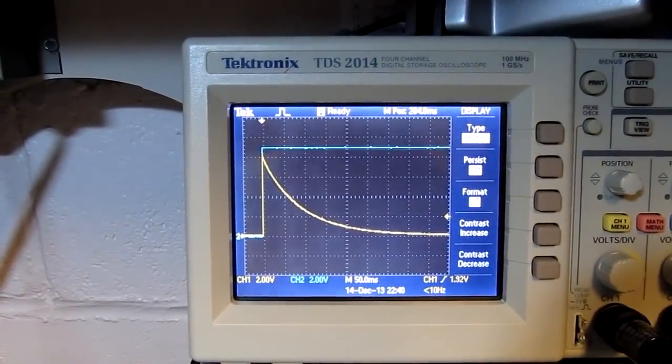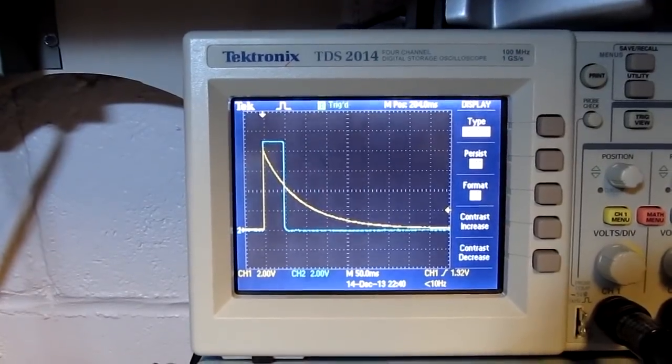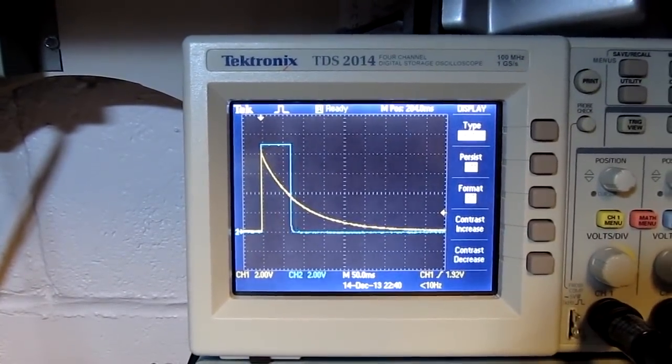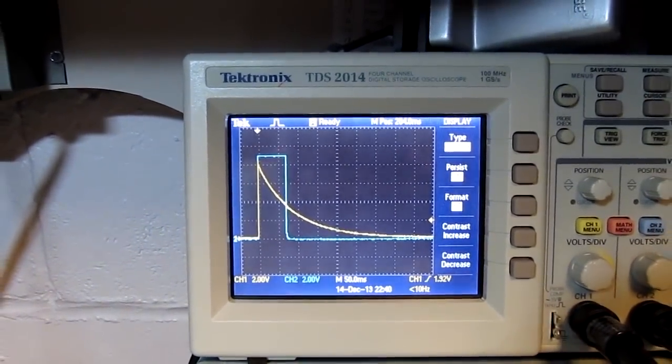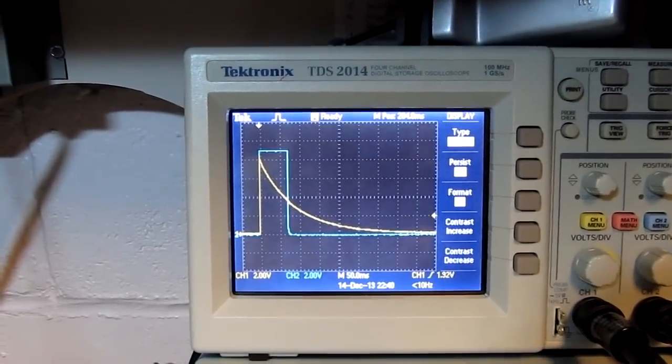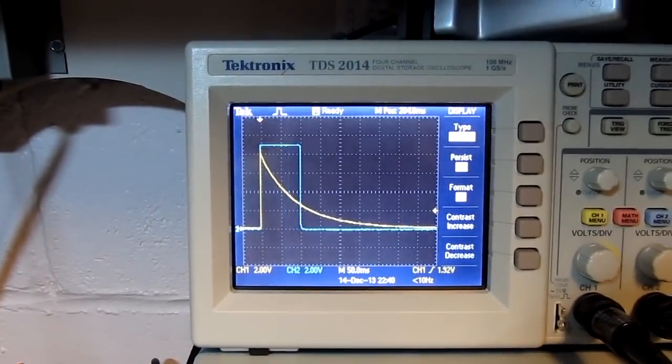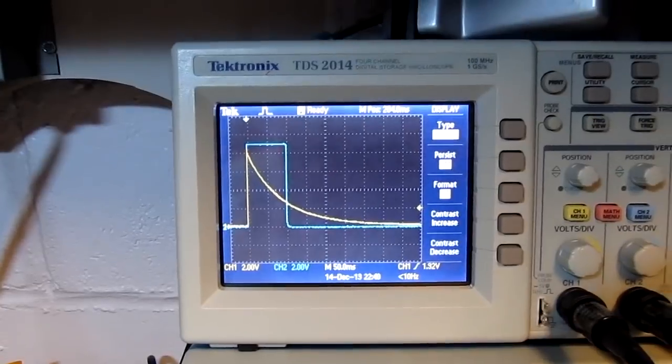But still wanted the circuit to respond with just a fast-rise and exponential-fall. So I responded that this would be pretty easy to do with an SCR, or a silicon-controlled rectifier.